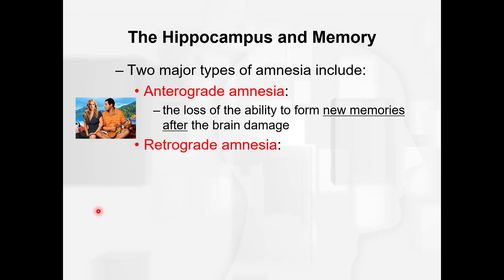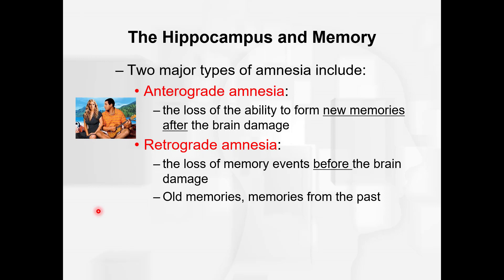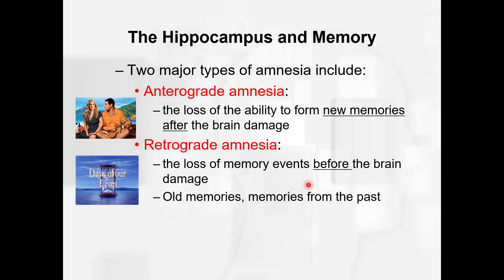Retrograde amnesia is the loss of memory for events that happened before the brain damage — older memories, memories from the past. That's a lot like what we see in soap operas like Days of Our Lives, where someone comes back into town and can't remember anything from their past, including personal information. It's a loss of memory of events before the brain damage.